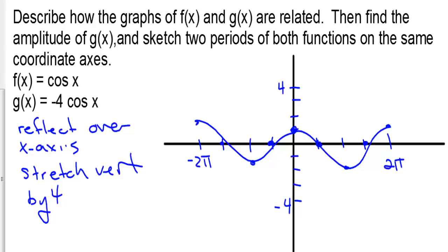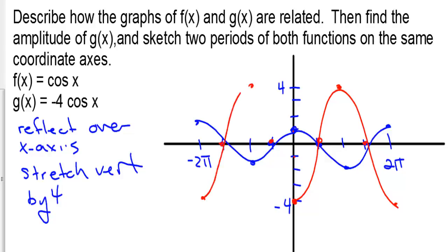Now we need to reflect over the x-axis and also stretch. So 1 would go to negative 1, but then stretching it takes it to negative 4. So for g of x cosine we go to 0, then 4, then 0, then negative 4 — that's one period. Then going back the other way: 0, 4, 0, and negative 4 for a second period.